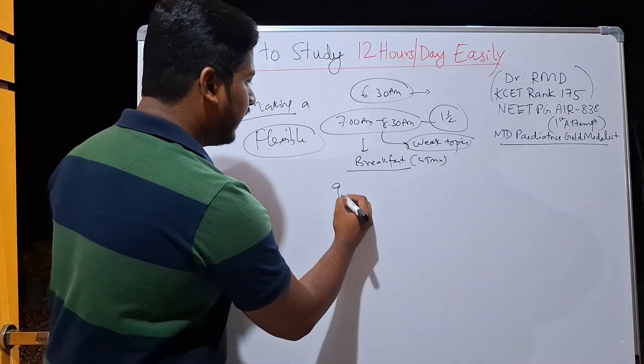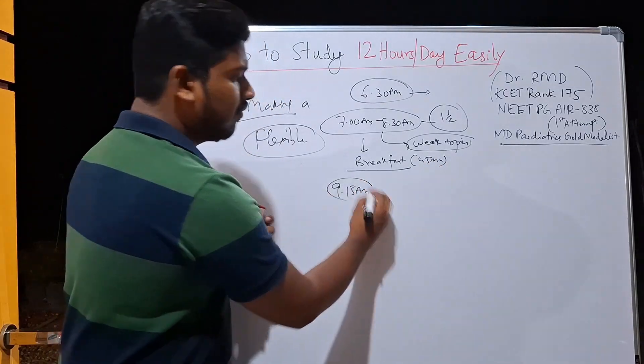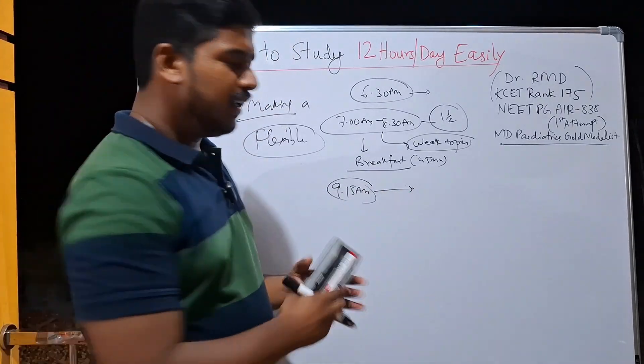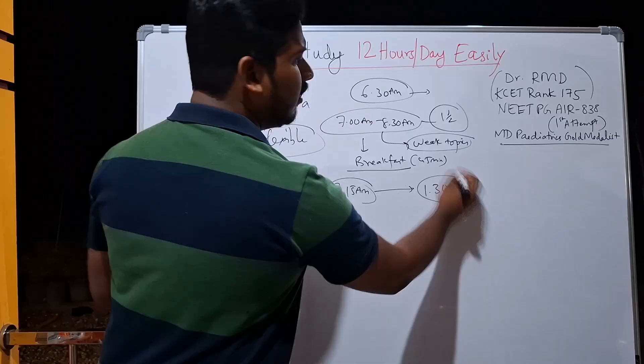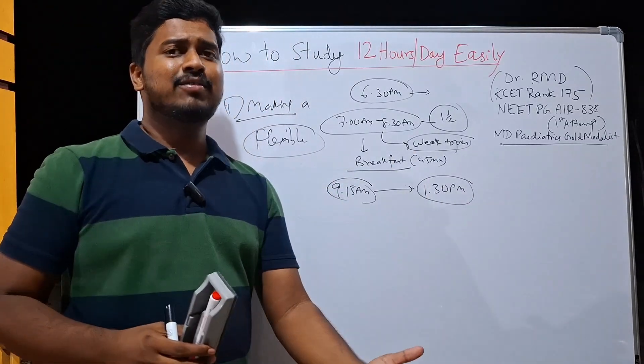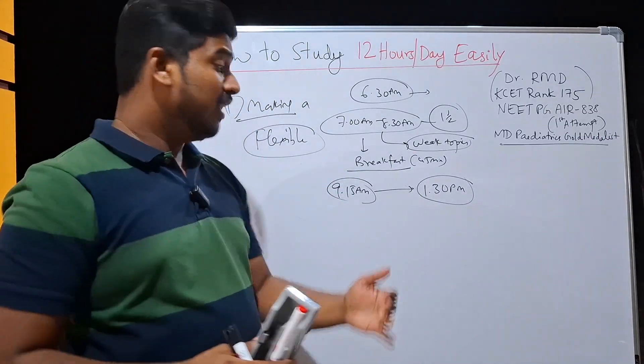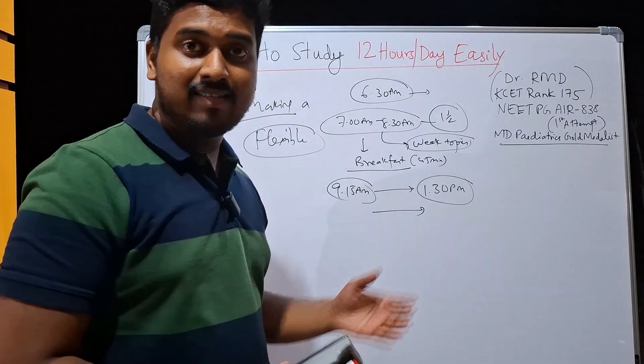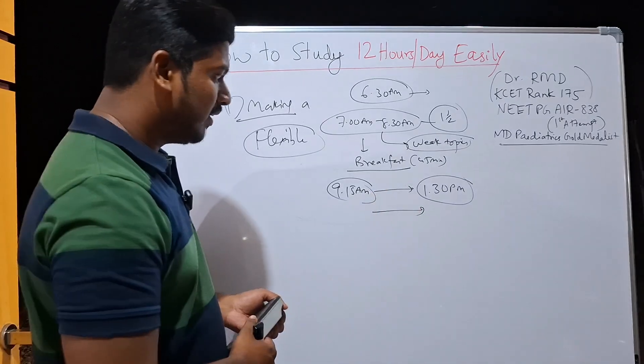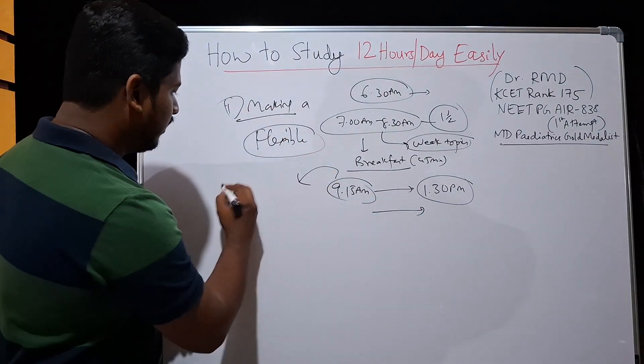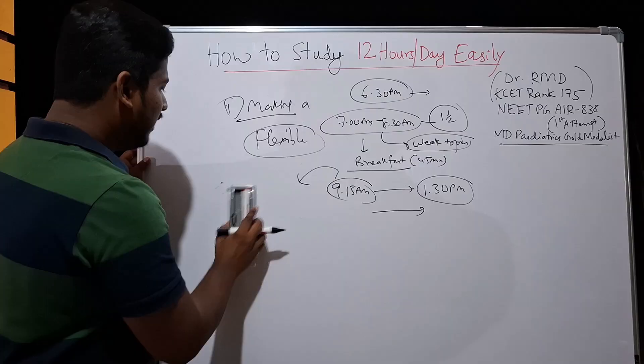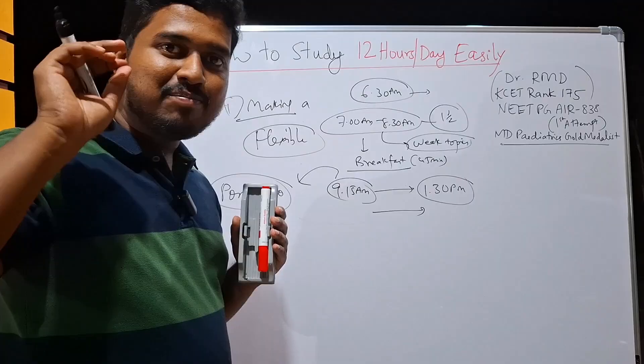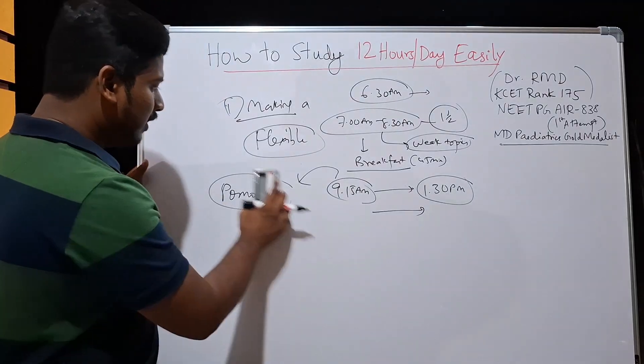Then you start at 9:15 a.m., 9:15 a.m. sounds like a good time right? This should continue till 1:30 p.m. in the afternoon. Now you will ask me, sir, I hardly can sit for 30 minutes, 45 minutes. How will I be sitting for 4.5 hours? How will I complete this target? It is insane. It is not possible. I am not trained to do this. So the tip for this is something known as Pomodoro. I bet you have definitely heard about Pomodoro. But the problem is you don't know how to implement Pomodoro. I will tell you how to implement Pomodoro.